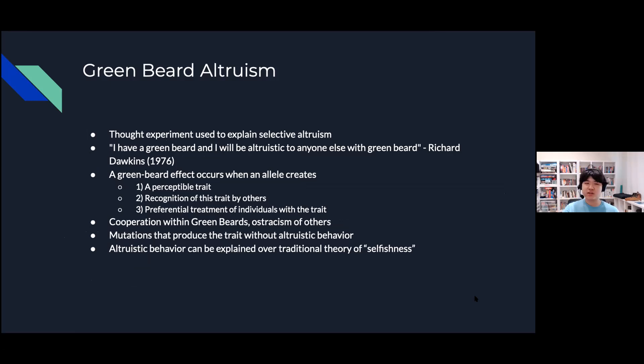Another popular thought experiment to explain selective altruism is the green beard altruism theory and this originates from the quote 'I have a green beard and I will be altruistic to anyone with a green beard.' The green beard effect essentially occurs when in an allele causes: a perceptive trait, in this case a physical green beard; two, recognition of this trait by others; and three, preferential treatment of individuals with the trait. In this thought experiment this would typically result in cooperations within people with green beards while it would also create ostracism of others.